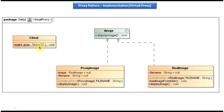When a client wants to display some image, it will call the display image method in the proxy image. The display image method checks whether the real image object is null. If it is null, it creates the real image object and then calls the display image method on the real image object. If the real image object is not null, it won't create a new one — it uses the existing real image object and calls display image. Creating the real image object is costly because the constructor loads the image from the disk using a file name.